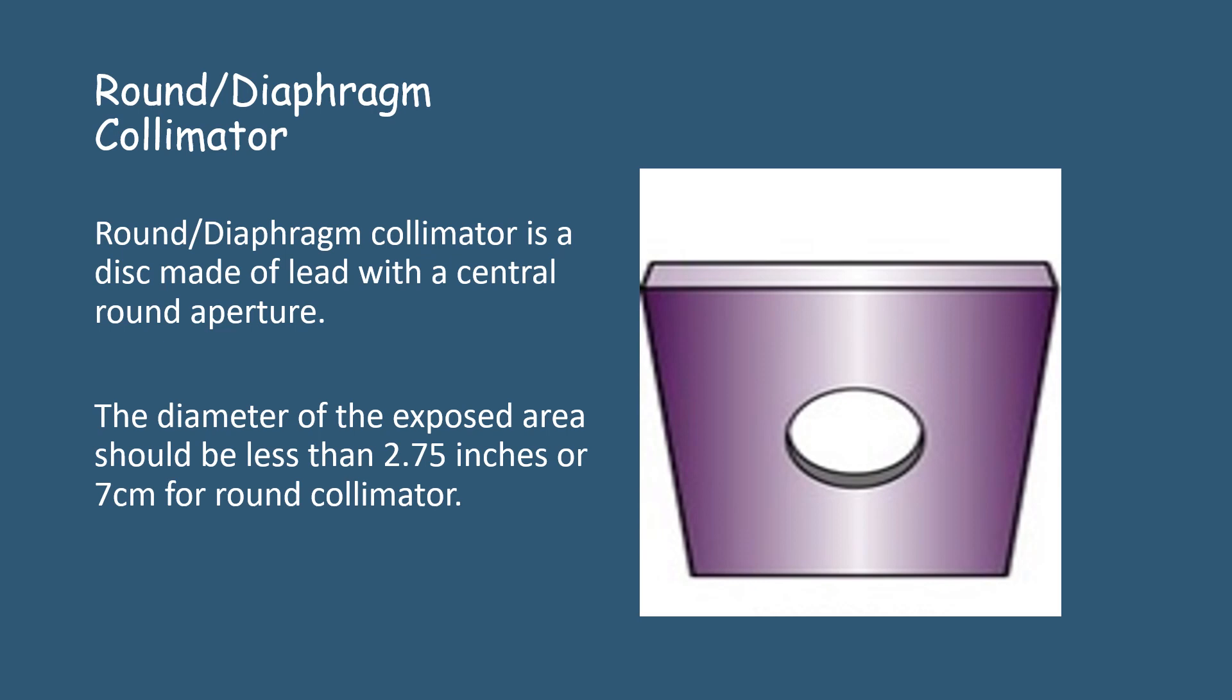Round or diaphragm collimator is a disc made of lead with a central round aperture. As we can see in this diagram, this is the central round aperture through which the X-ray beams pass. The diameter of the exposed area should be less than 2.7 inches or 7 cm for round collimators.